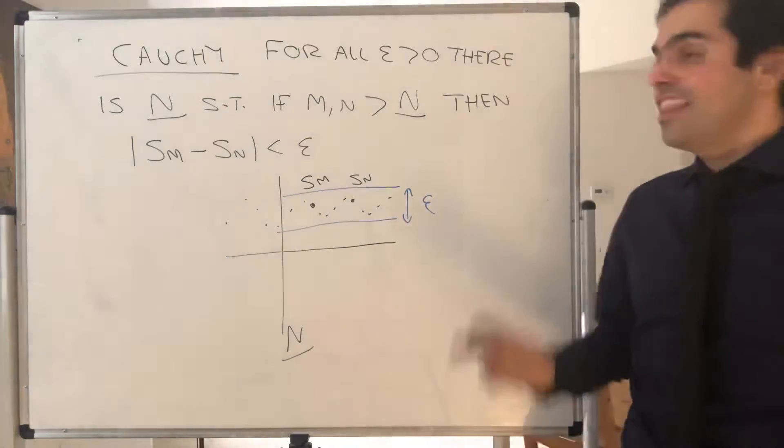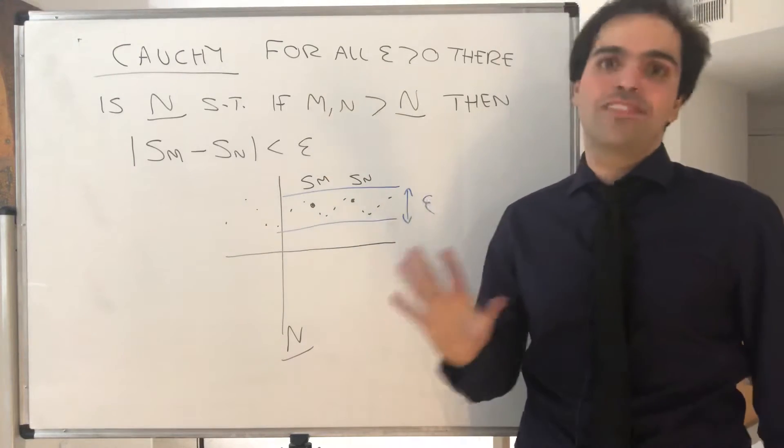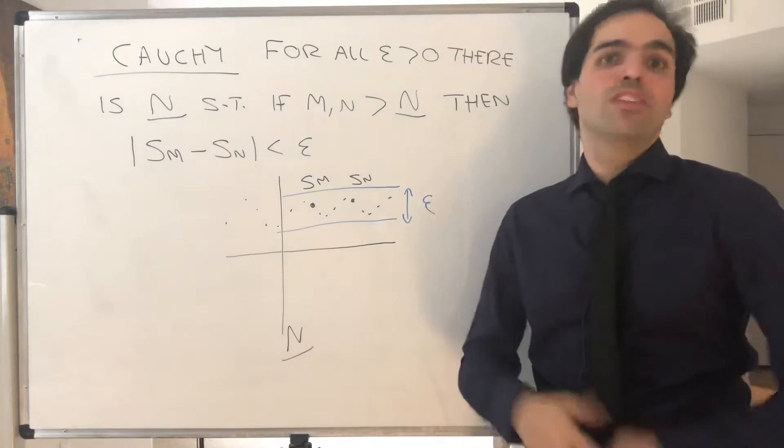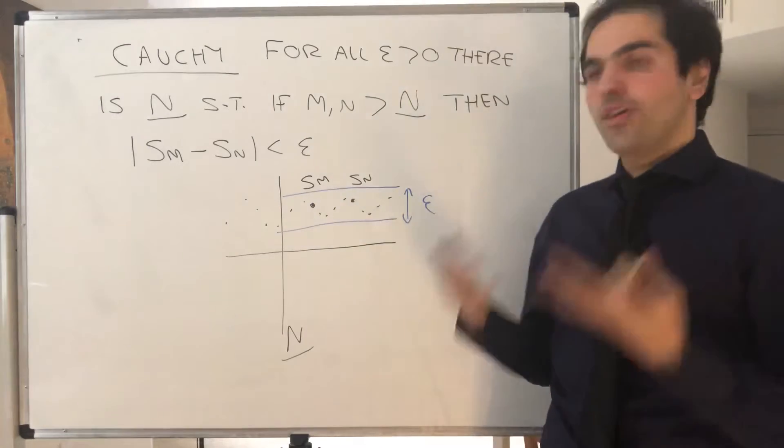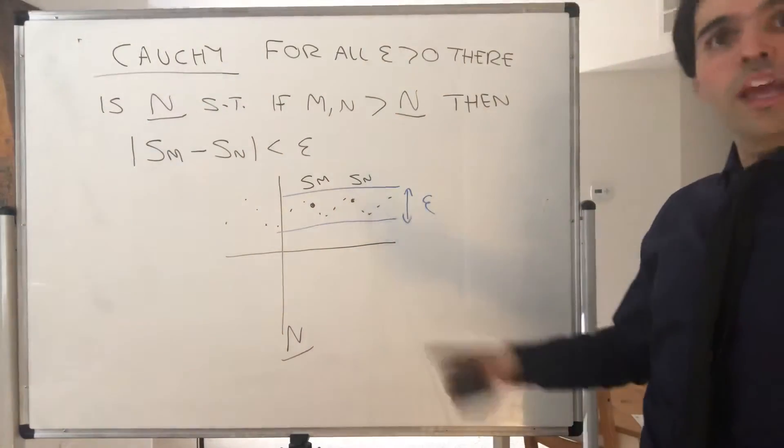Be careful, strictly speaking it's not the same thing as convergence because convergence means the sequence gets closer to a fixed number. Here the sequence gets closer to each other. That said, in the real numbers this is the same as convergence, and yet another reason why the real numbers are great. They're what's called complete, where Cauchy is equivalent to convergence.